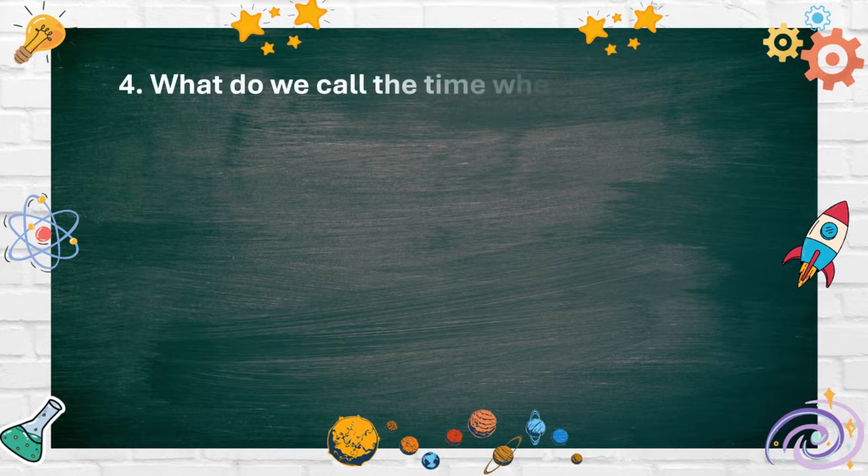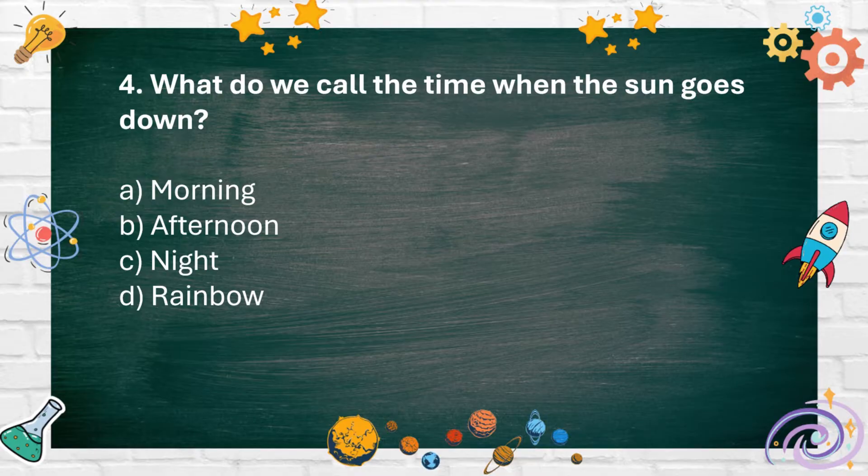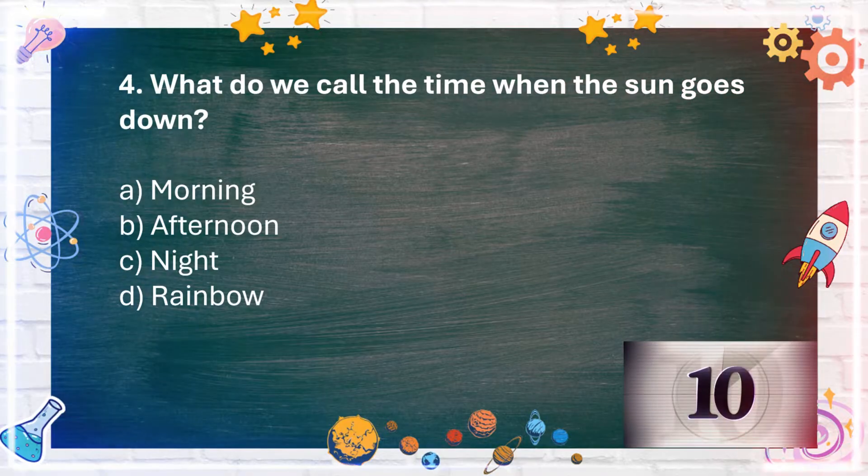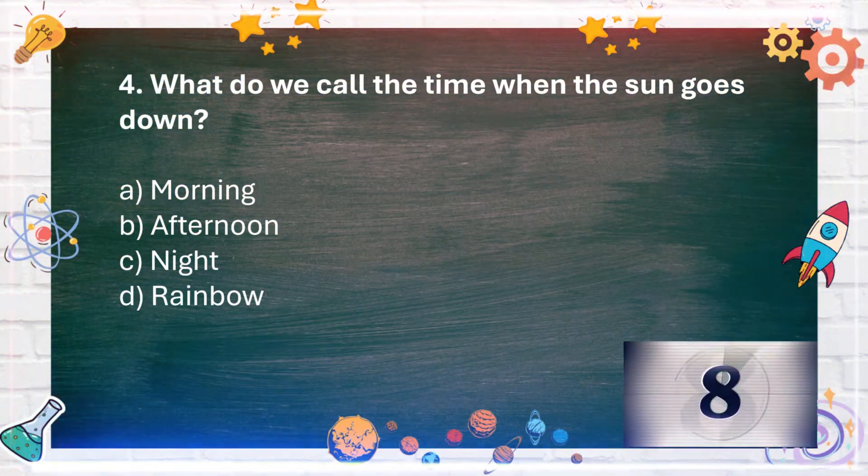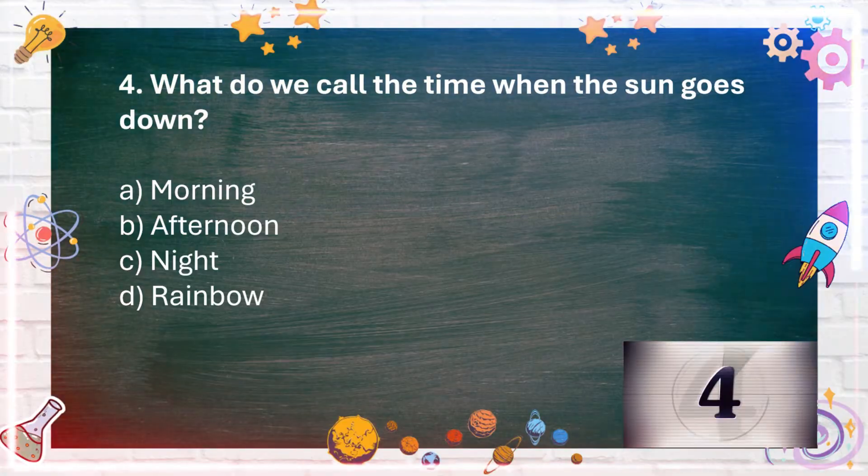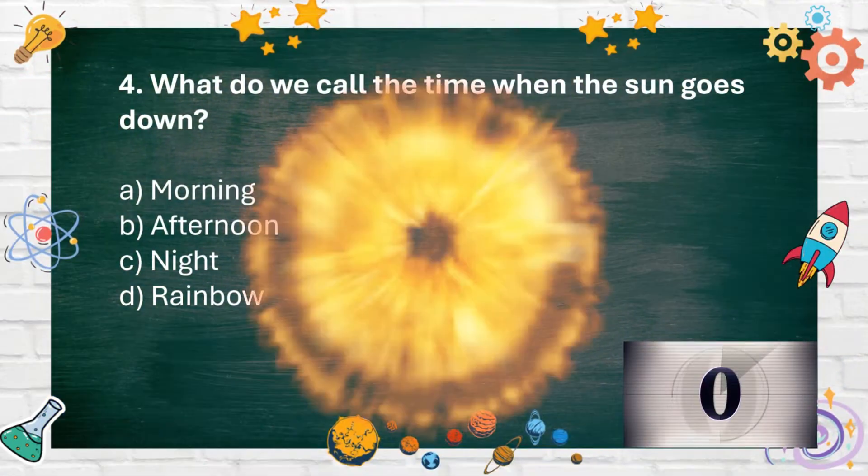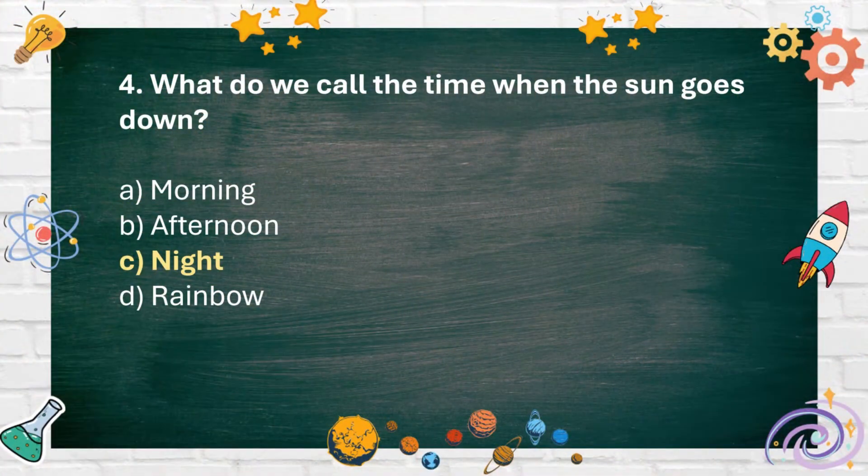Number 4. What do we call the time when the sun goes down? A. Morning B. Afternoon C. Evening D. Night. The answer is C. Night.